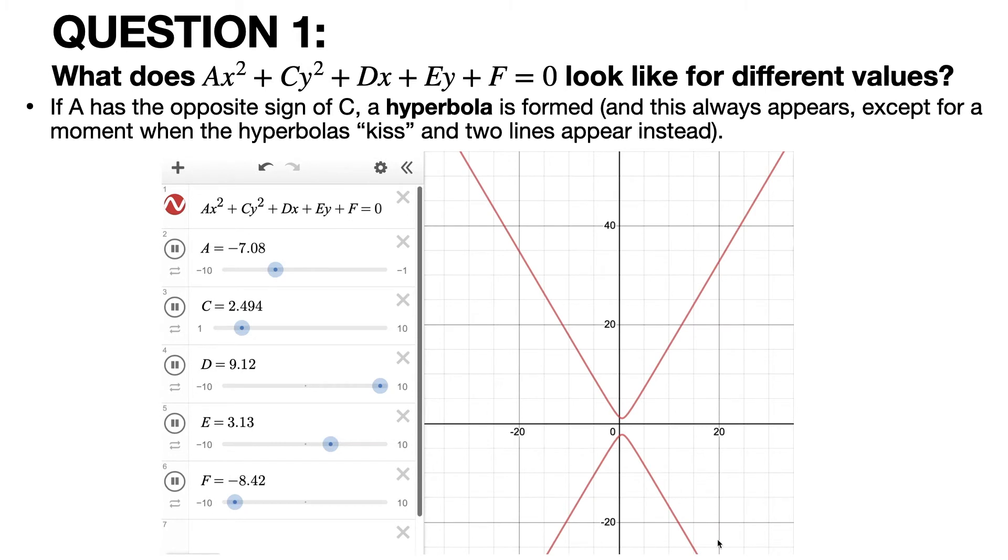If A has the opposite sign of C, a hyperbola is formed. And this always appears, except for one magic moment when the hyperbolas kiss, so to speak.